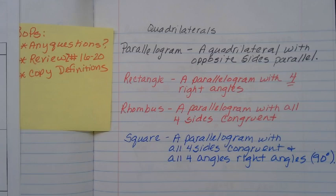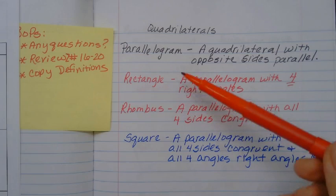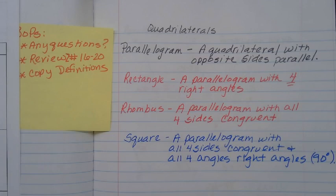Okay, so today we're going to continue with some quadrilaterals. We're going to talk about three different quadrilaterals today: a rectangle, a rhombus, and a square.